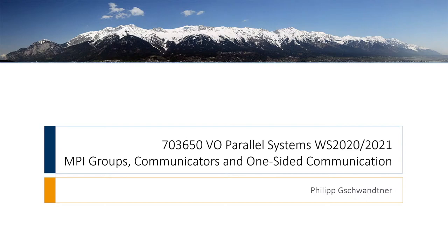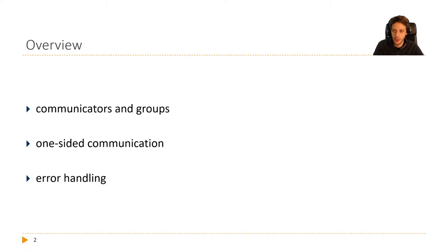Welcome to our lecture on MPI groups, communicators, and one-sided communication. There's a short outline and a slightly better image because I got a green screen for home, so I have some color now. We're going to talk about communicators and groups today, which are a means to limit collective communication.